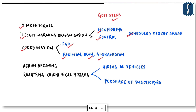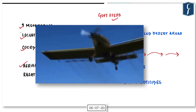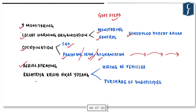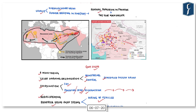India is also actively coordinating with international agencies like FAO and neighboring countries like Pakistan, Iran, and Afghanistan — the countries through which locusts arrive. If locust populations are curtailed there, it helps India greatly. Post-attack actions involve aerial spraying of insecticides, with funds available under Rashtriya Krishi Vikas Yojana for vehicle hiring and direct purchase of insecticides.